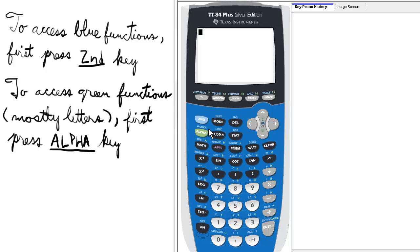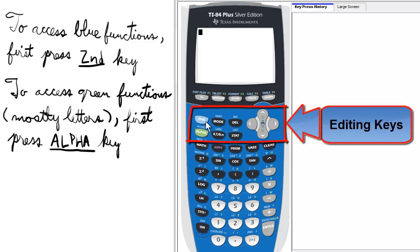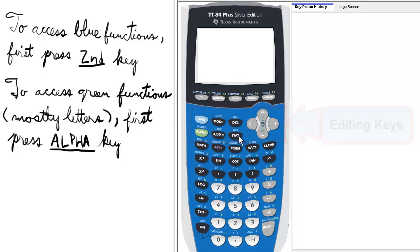Moving down the keyboard, we have the editing keys. In this section, it's from 2nd in the upper left all the way to Stat in the lower right. Included in these keys are the arrow keys, which help move the cursor on the screen of the calculator.